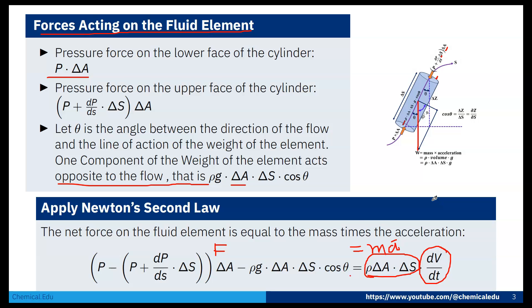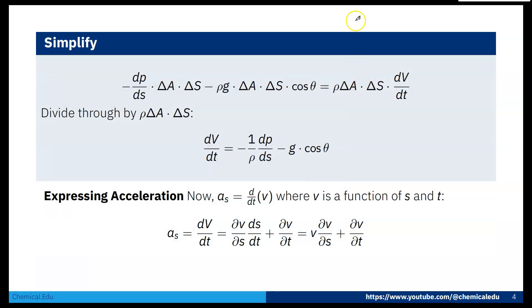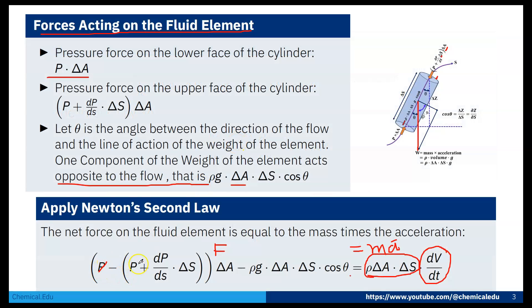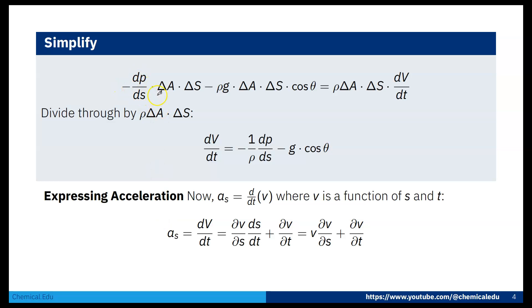Simplifying this expression, P and P cancel out. Dividing through by ρ δA δS, we get: dV/dt = −(1/ρ)(dP/dS) − g cosθ.